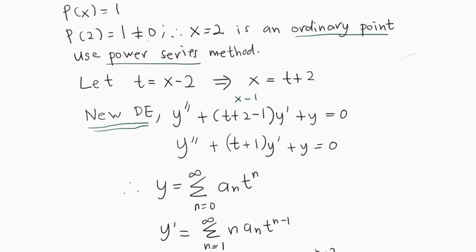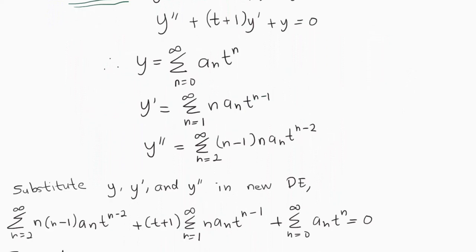Taking the power series, we have y = Σ(n=0 to ∞) aₙ tⁿ — note it will be t instead of x. So y' = Σ(n=1 to ∞) n·aₙ·t^(n-1), and y'' = Σ(n=2 to ∞) n(n-1)·aₙ·t^(n-2).